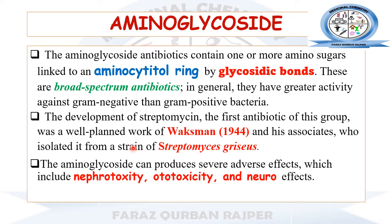Aminoglycosides are a group of antibiotics that belong to the class of broad spectrum antibiotics. As far as their chemical structure is concerned, they contain one or more amino sugars that are linked by glycoside bonds to the aminocyclitol ring. They are broad spectrum antibiotics, meaning they have activity against both gram-negative and gram-positive bacteria. The first antibiotic of this class that was identified was streptomycin, developed by Waksman and his associates in 1944.